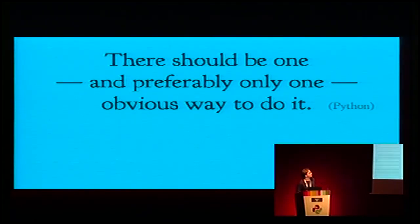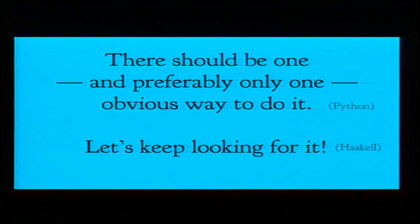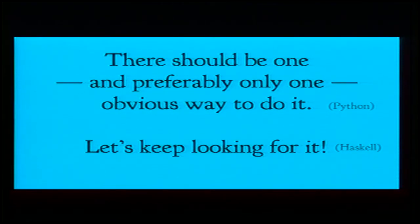In the Zen of Python we say there should be one and preferably only one obvious way to do it, and it's like Haskell adds 'okay, let's keep looking for that.' So you'll often find new libraries for stuff that already exists, but which make different assumptions and choose different trade-offs. Each time, those libraries try to compare as much as possible with existing ones — it's not reinventing the wheel, it's really searching for something new and better.